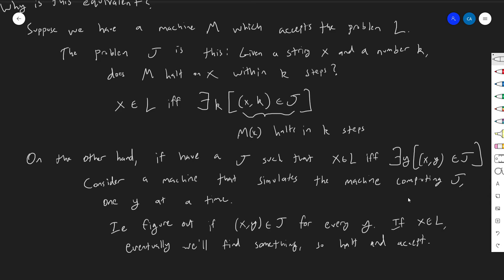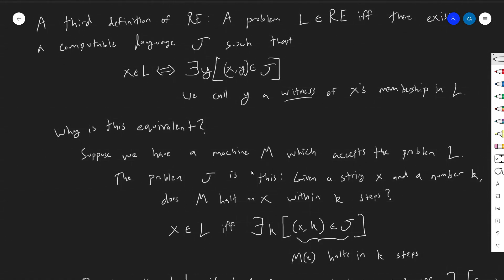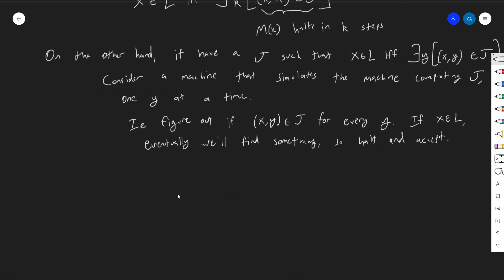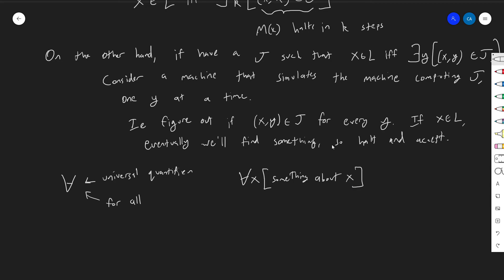So this equivalence is even more direct than the equivalence between accepting and being able to computably enumerate. This is yet a third definition. The reason I'm bringing up this third definition now is that there's actually a complementary class, because there are two types of quantifiers. We have this big backwards E, but there's another one — an upside-down A. This is called the universal quantifier, and the way it reads is: "for all."